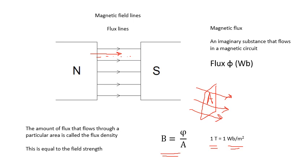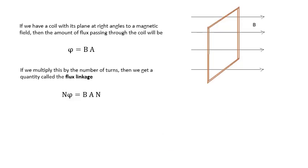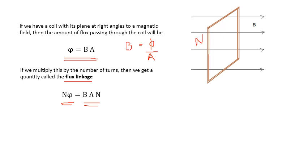If we have a coil and the plane of the coil is at right angles to the magnetic field, so that lots of flux is going through the coil, then B equals phi over A, meaning phi equals BA — that's how much flux is going through the coil. There's another useful quantity when we talk about generators: it's called the flux linkage. The flux linkage is just phi multiplied by the number of turns N, so flux linkage equals N*phi, and therefore flux linkage equals BAN.